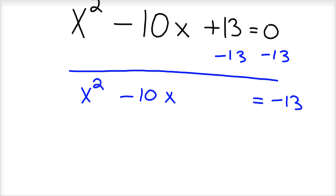So our middle term is negative 10. So I'm going to take negative 10, divide it by 2, and square it. And so negative 10 divided by 2 is negative 5. Squared is 25.